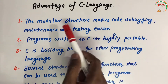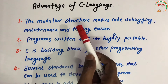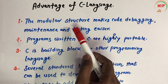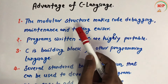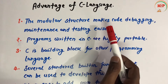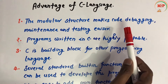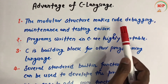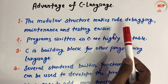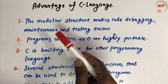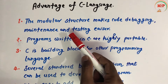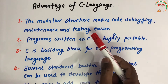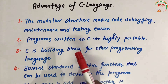C language has a modular structure, meaning I can divide the program module by module. This is an advantage for debugging — if there is an error it will be easy to debug, easy for maintenance, and easy for testing.